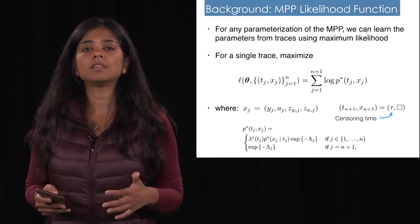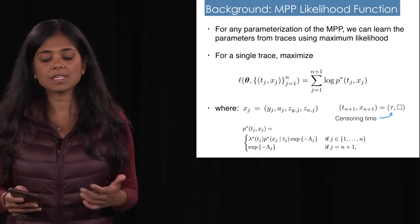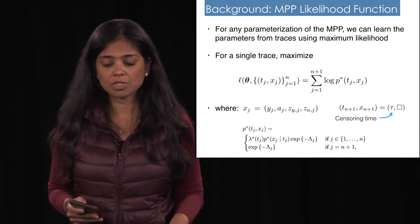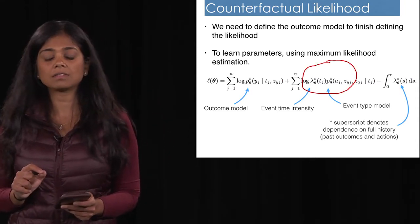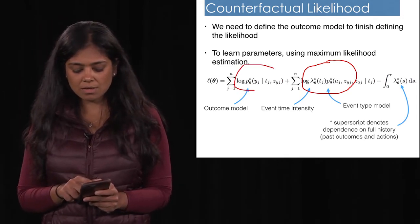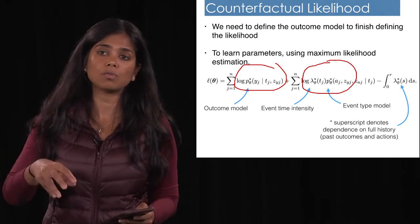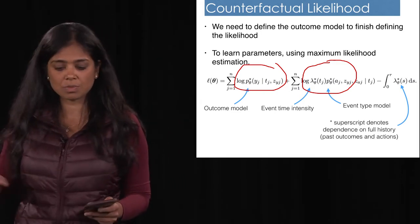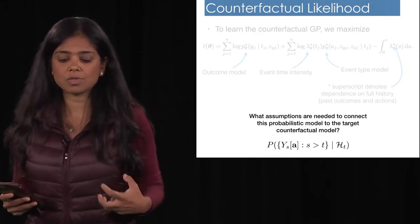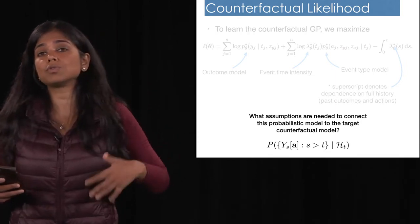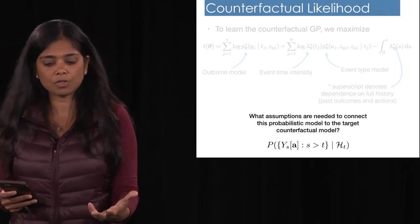You can define a probabilistic model for each of those terms. To learn this from data, you write down the likelihood for each term in the observational trace and use maximum likelihood estimation. In particular, the term in the middle models the event process itself — when event times occur — and another term models the outcome value (the creatinine value) given that an event has occurred, modeling the measurement value given historical measurements. We're treating both the values and the timing of those values as random, defining a probabilistic model and using MLE to estimate it. The question is how to tie this back to the target counterfactual model of interest.